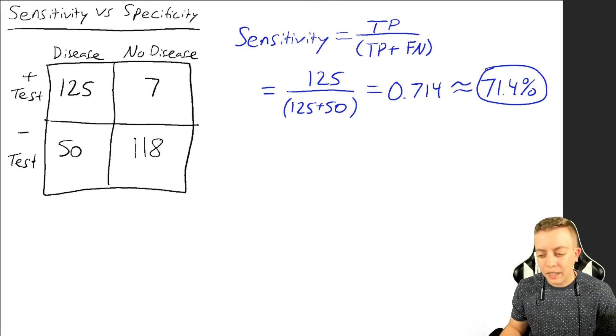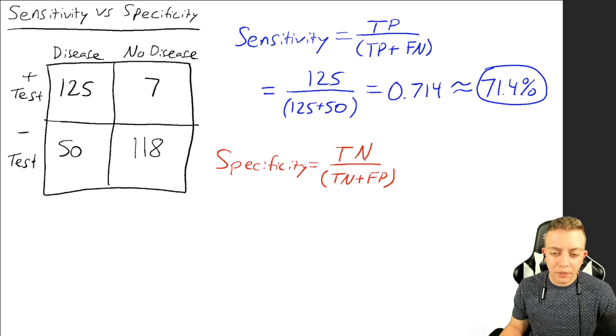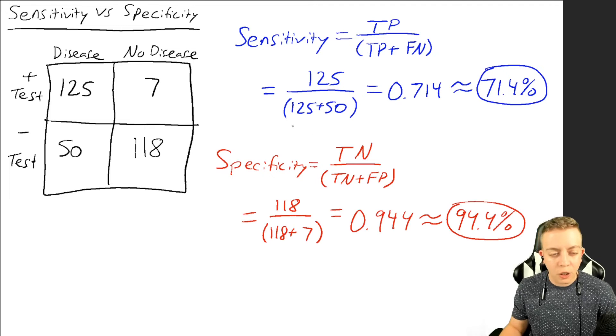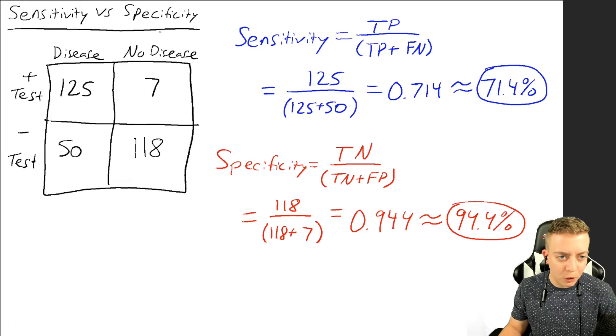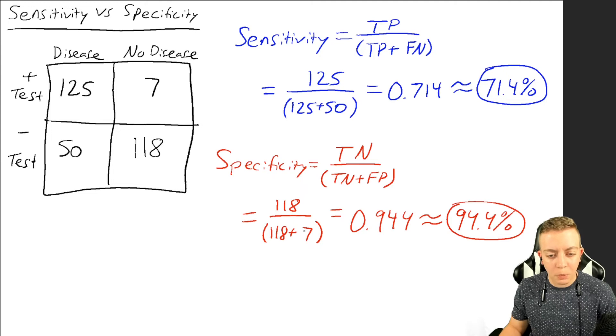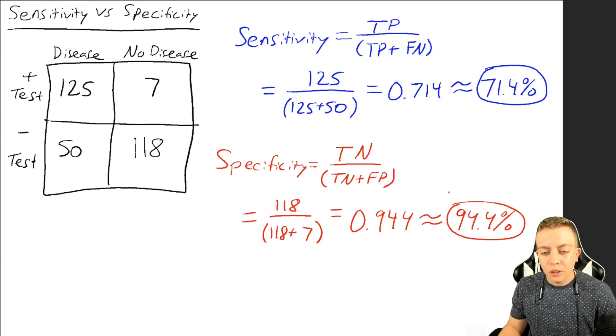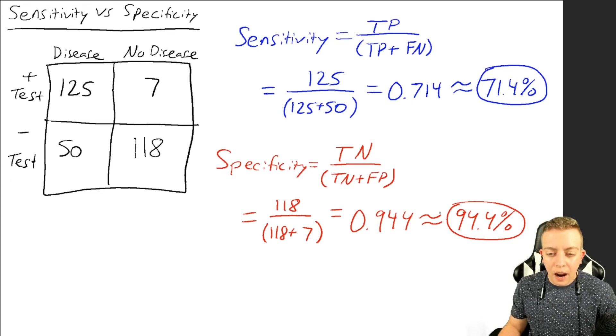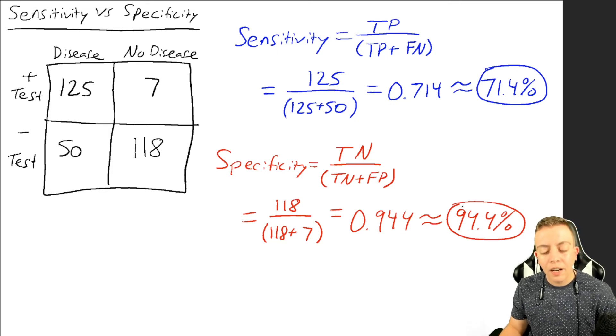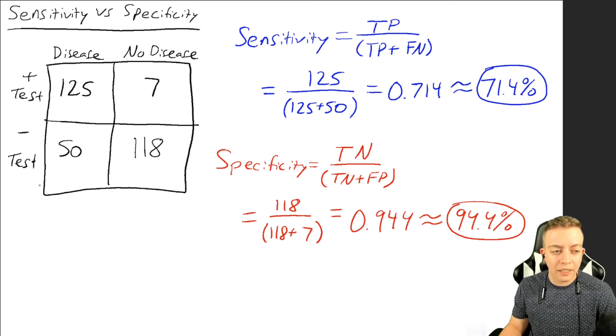Looking at the specificity, we have true negatives divided by the true negatives plus the false positives. We take our number 118 and add that to seven, because that's all of the people who do not have the disease. So we take the true negatives, 118 divided by 118 plus seven, we get 0.944, or a percentage of roughly 94%. In this case, out of 100% of people that we know do not have the disease, about 94 of them would actually test negative.